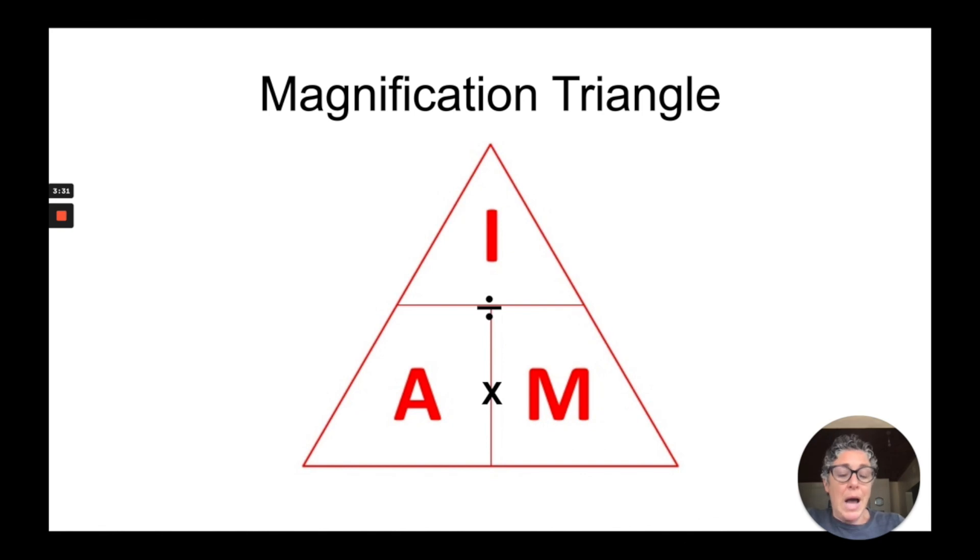If you remember I A M then you will know the location for each of the specifics for the magnification triangle. I is image size, A is actual size, and M is magnification.